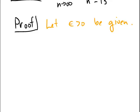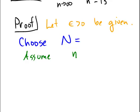So we have to choose a delta, or not a delta, sorry, an N. So we're going to choose N to be equal to something, but I don't quite know what yet. But once I find that, then we're going to assume that n, little n, is bigger than capital N.